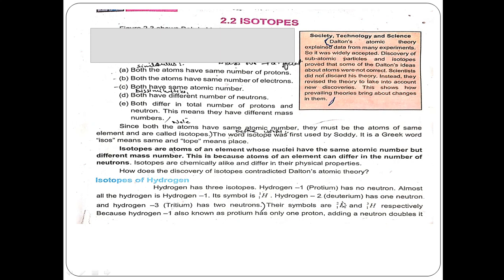The second isotope is hydrogen-2, that is deuterium, which has 1 neutron. How many neutrons? 1 — because hydrogen's mass number is 2: 1 proton plus 1 neutron. Hydrogen-3, tritium, has 2 neutrons. Its symbol is H with mass number 3 and atomic number 1.